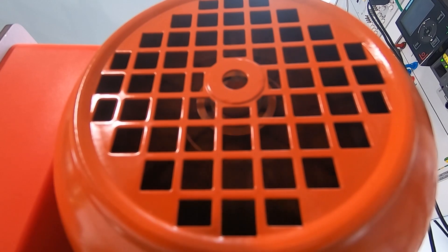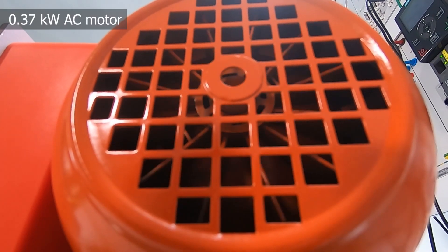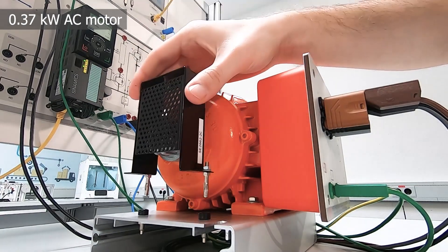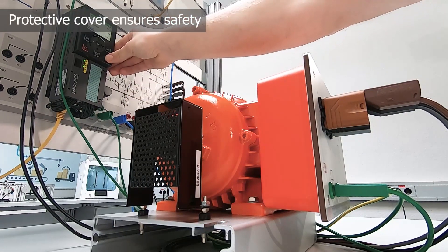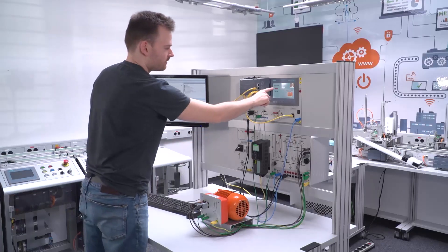This carries out the speed and rotation direction control of the 0.37 kW AC motor. The shaft of the drive is encased with a protective cover so that the safety of the trainees is guaranteed at all times.